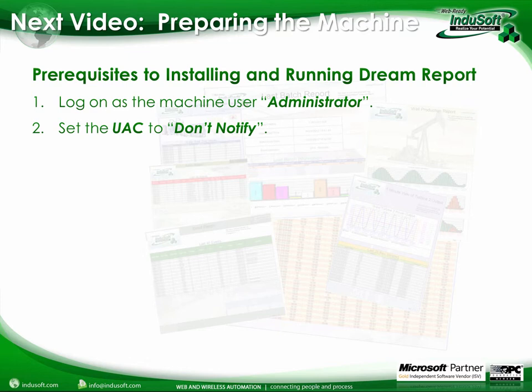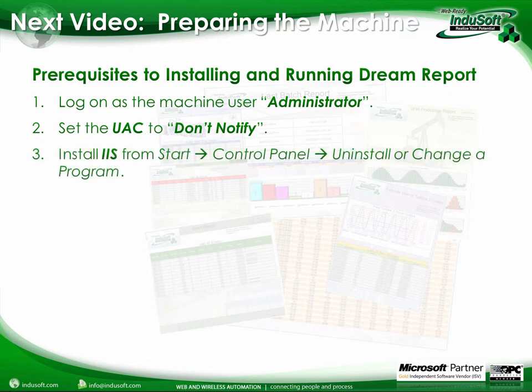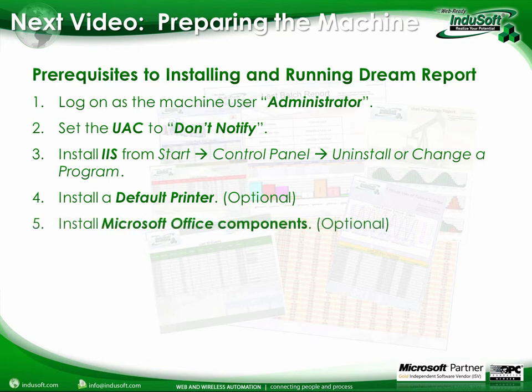We're going to set the UAC to 'don't notify.' We're going to install IIS. We're going to talk about installing a default printer — we're not going to do it, but you can install one if you want to. We'll install the Microsoft Office components; in this particular case the machine we're going to use already has Office installed. You might want to install it on yours if you want to use Excel to look at some of the XLS reports, or you can use OpenOffice as well — anything that will look at an XLS report is usable.